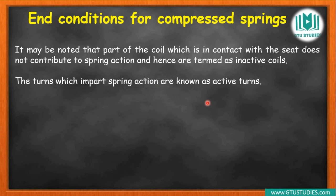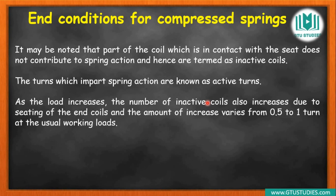The total number of coils consists of active coils and inactive coils. Among those coils, some are active and some are inactive. We need to check which coils are active and which are inactive, because in the equation inside calculations, we only take active coils — not inactive coils.